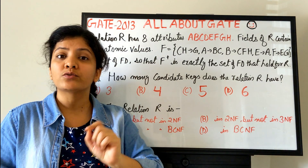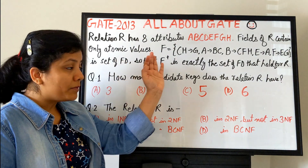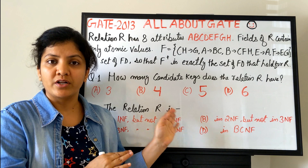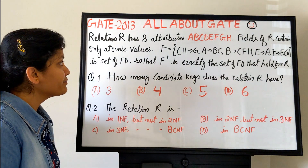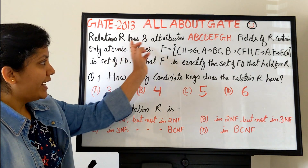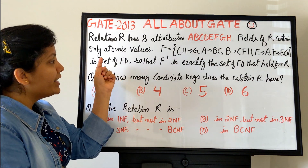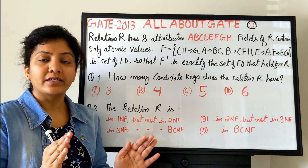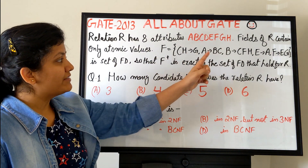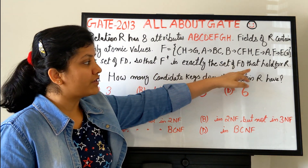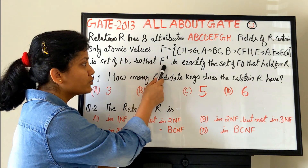In this video I have a question from GATE 2013. It was a linked question — two questions worth 2 marks each with common data. We have a relation R with eight attributes A to H (ABCDEFGH). The fields of R contain only atomic values, meaning none of the attributes are multivalued. The given FD set has five FDs, and F+ is exactly the set of FDs that hold for R.